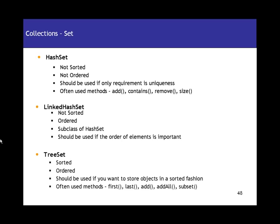An important distinction: an implementation can be ordered but not sorted — like LinkedHashSet. But if an implementation is sorted, you can guarantee it is also ordered. So it can be ordered-unsorted, or unordered-unsorted, or sorted-and-ordered — but it can never be sorted and not ordered. If it's sorted, it is guaranteed to be ordered as well.